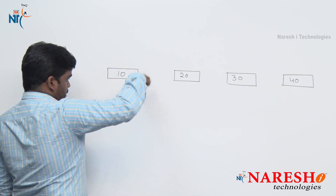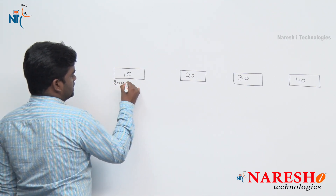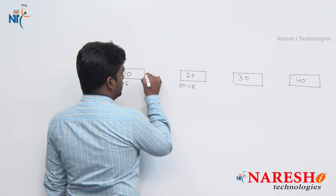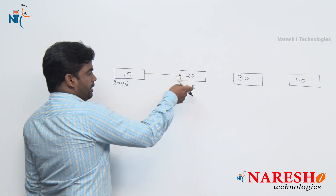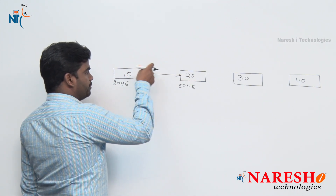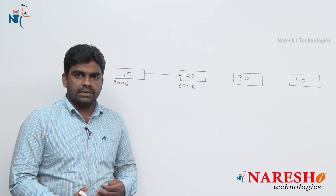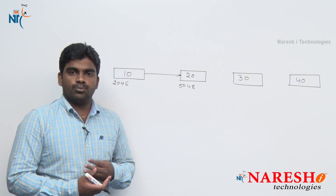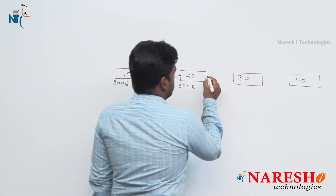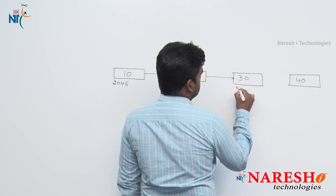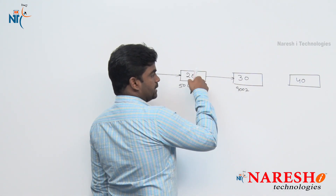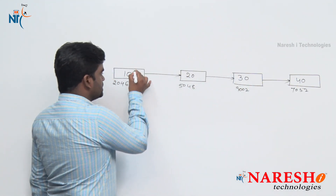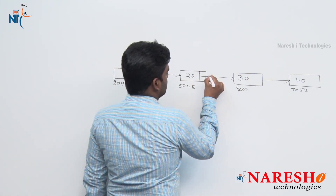For example, the first element is a block at memory location 2046. The next suppose is at 5048. There is a connection — we are storing 5048 in the link field. Different types of Linked Lists — single linked list, double linked list, circular linked list — we will discuss more briefly. Here, 5048, 9002, and 7052 are stored as link parts connecting the nodes.